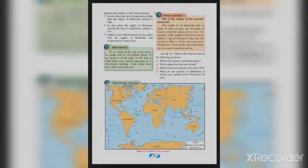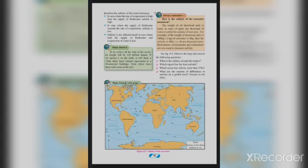Now let's learn how salinity of seawater is measured. The weight of all dissolved salts in the water, in ratio of parts per thousand of water, is called salinity of seawater. For example, if the weight of dissolved salts in 1000 grams or 1 kg of seawater is 40 grams, then the salinity is 40‰ — that is, 40 per thousand.